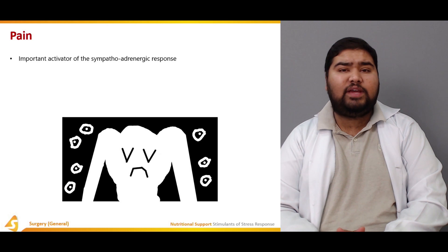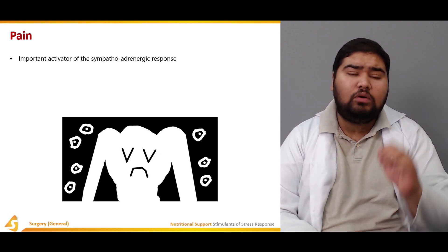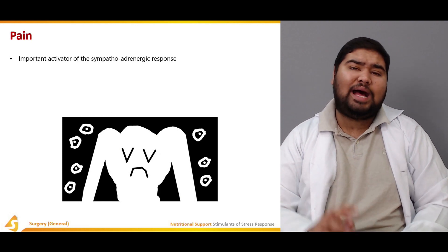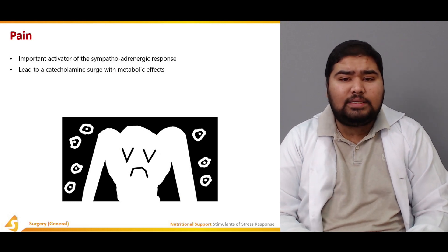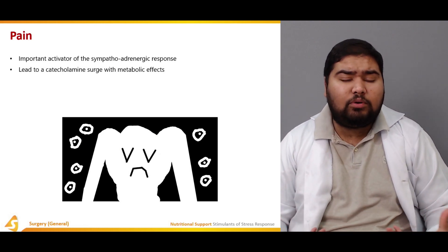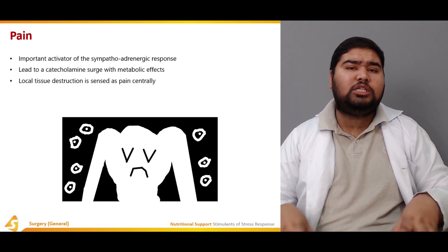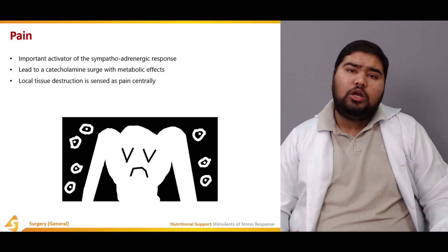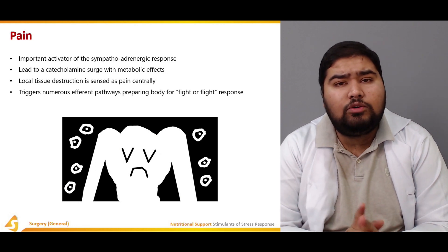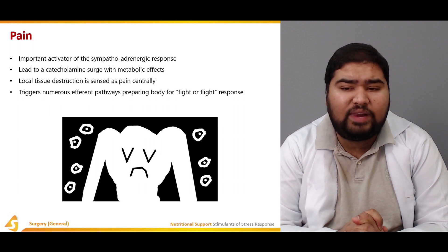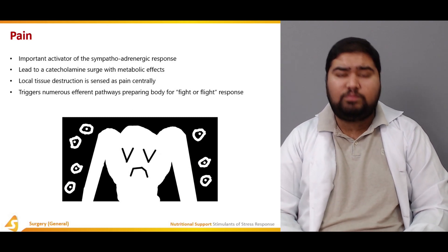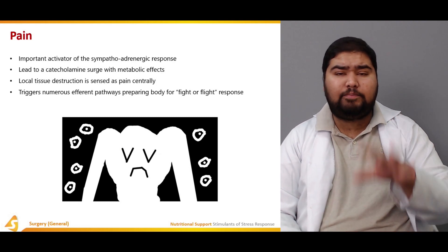Pain is an important activator of the sympatho-adrenergic response. The sympathetic and adrenergic response is produced by the pain perceived at the site of the insult. It leads to a catecholamine surge with metabolic effects, so the body enters the fight-or-flight response with a metabolic surge. Local tissue destruction is what is perceived as pain — it triggers numerous efferent pathways which prepare the body for the fight-or-flight response.